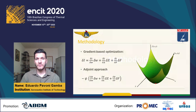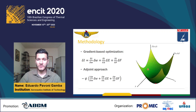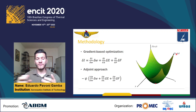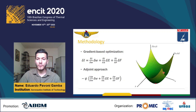First, we need to define the optimization method. We chose gradient-based optimization. The idea behind this method is: given a generic function and a generic starting point x0, y0, this method changes the function variables — x and y in this case — in the direction of the function gradient, in order to reach the minimum or maximum point depending on the problem.